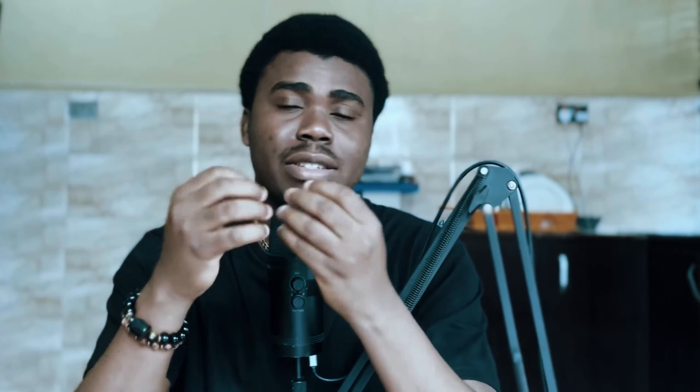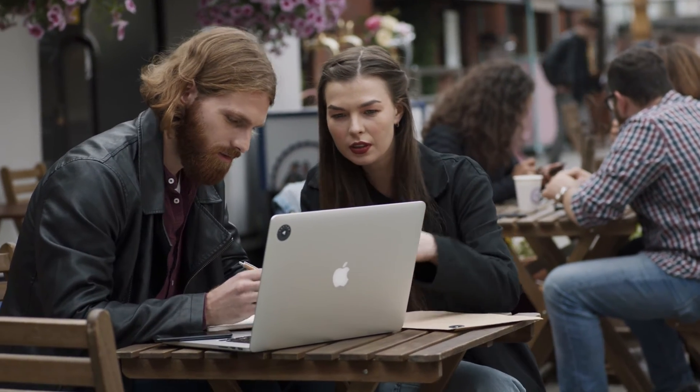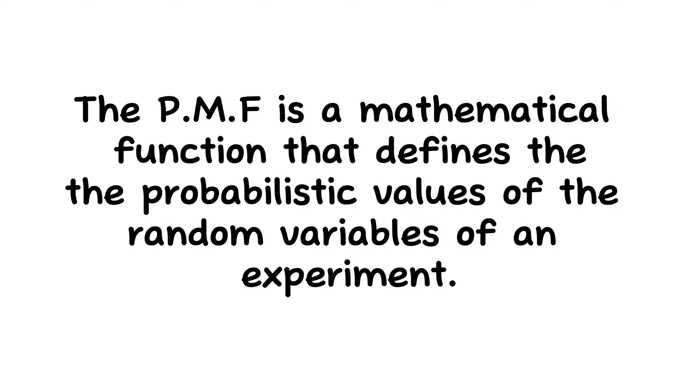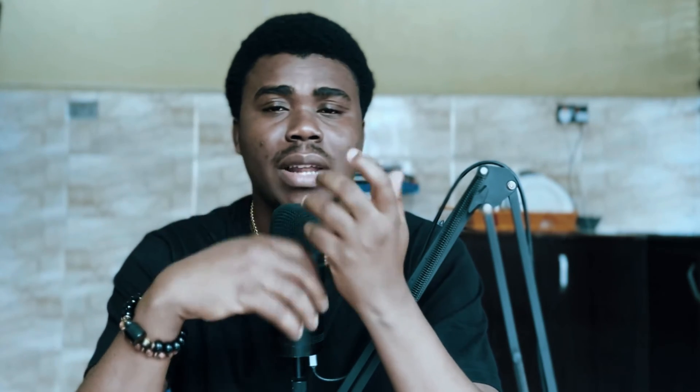The number of children in a family can never take a decimal value, so the probability distribution that defines variables that are discrete in nature is called a discrete probability distribution. The discrete probability distribution has some important details: we have the probability mass function (PMF), which is the mathematical function that helps us get the probabilistic value attached to any random variable of a discrete distribution.